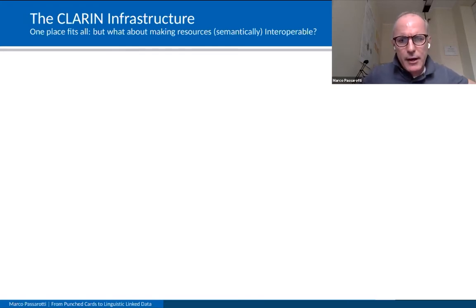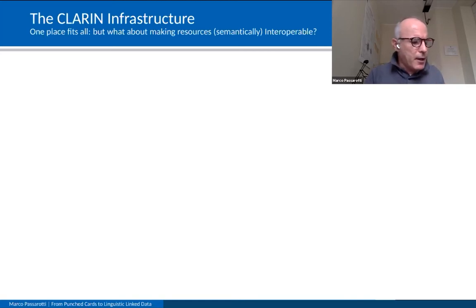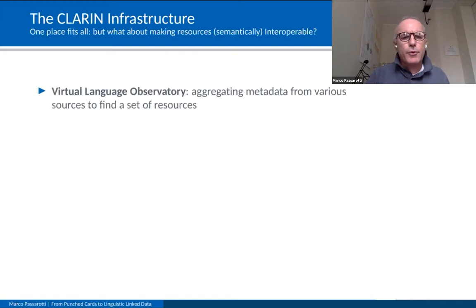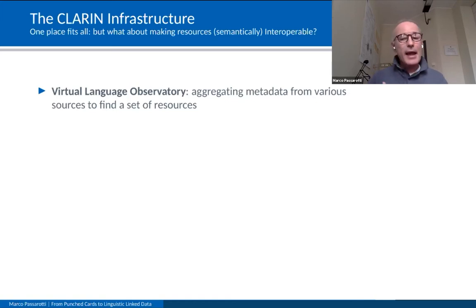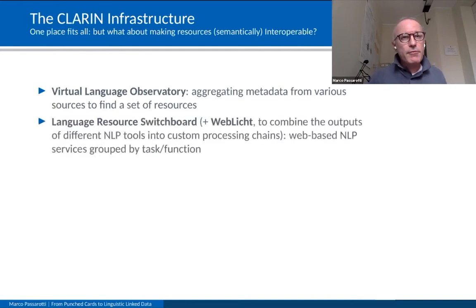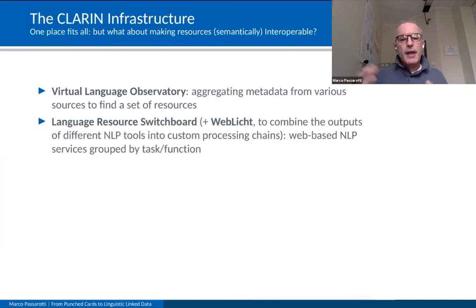The current infrastructure makes resources partly findable, accessible, and reusable — but what about making them semantically interoperable? There are some initiatives in CLARIN towards making resources and tools collaborate. For instance, the Virtual Language Observatory aggregates metadata from various sources to find a set of resources that share some metadata. This is a great initiative to search and collect resources, but not yet a step towards making them really interact. Similarly, the Language Resource Switchboard is a collection of web-based NLP services grouped by task and function.